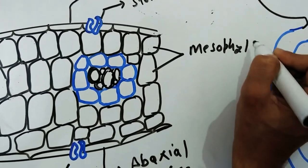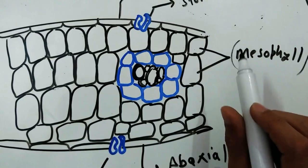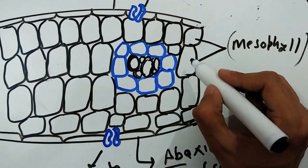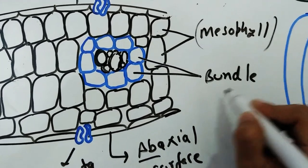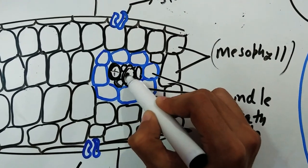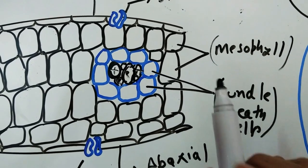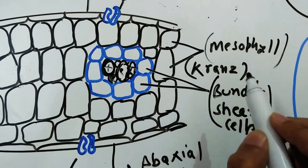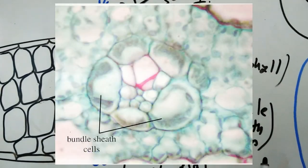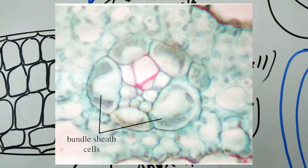The cells you are seeing between the adaxial and the abaxial surface, which I have drawn in black, are known as mesophyll cells. In C3 cycle plants, the Calvin cycle ran inside these mesophyll cells. The most important cells, which are the characteristic feature of C4 cycle plants, are the cells drawn in blue — these are known as bundle sheet cells. These bundle sheet cells surround the vascular bundle — xylem and phloem. This type of anatomy is known as Kranz anatomy, where Kranz simply means the circular arrangement of bundle sheet cells around the vascular bundle.